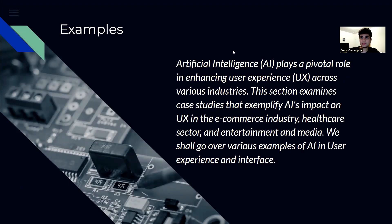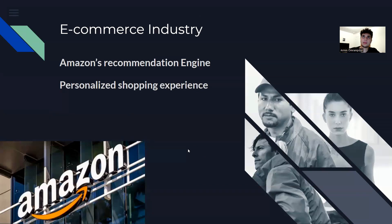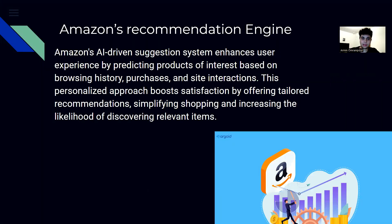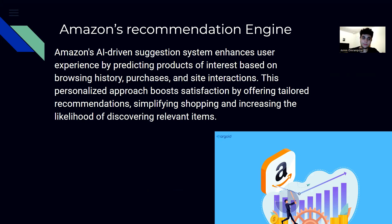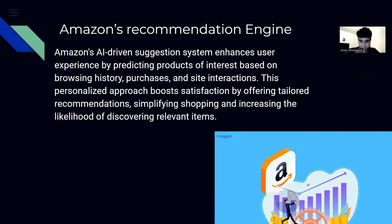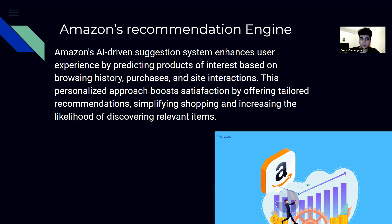We'll start with the e-commerce topic. In terms of the e-commerce industry, we focused on Amazon — specifically the recommendation engine and their personalized shopping experience. Amazon's recommendation engine is an AI-powered system that utilizes machine learning algorithms to forecast products to users with the belief that users will find them interesting and want to buy them. This manifests in the shop as the 'recommended for you' or 'products you might like' sections. We believe this is a big factor as to why Amazon became as big as they did, achieving a 37.8% market share in the e-commerce industry.